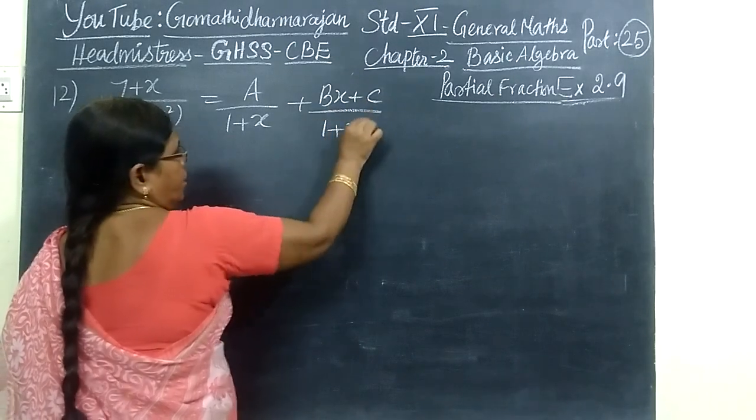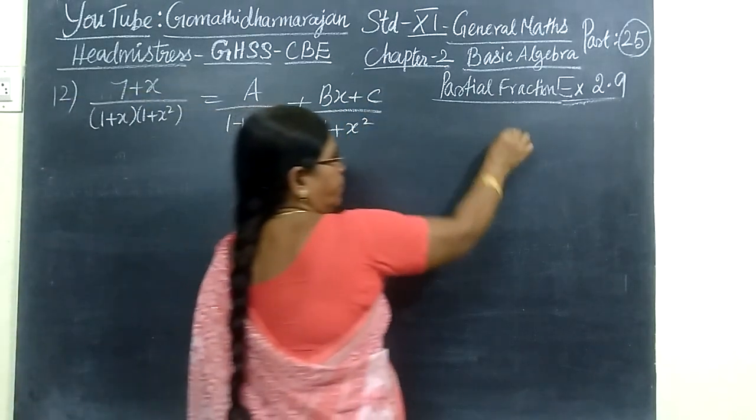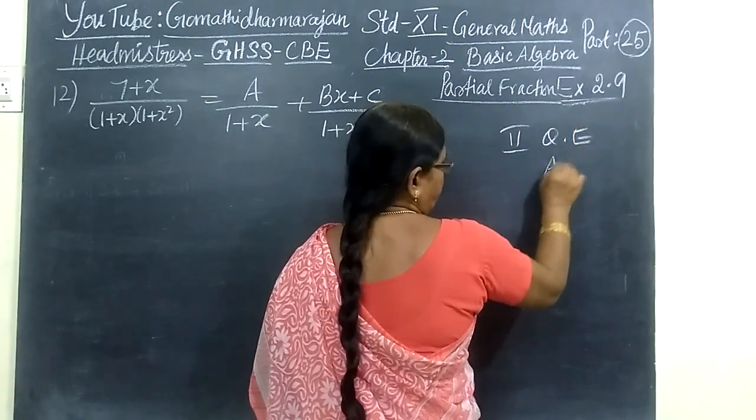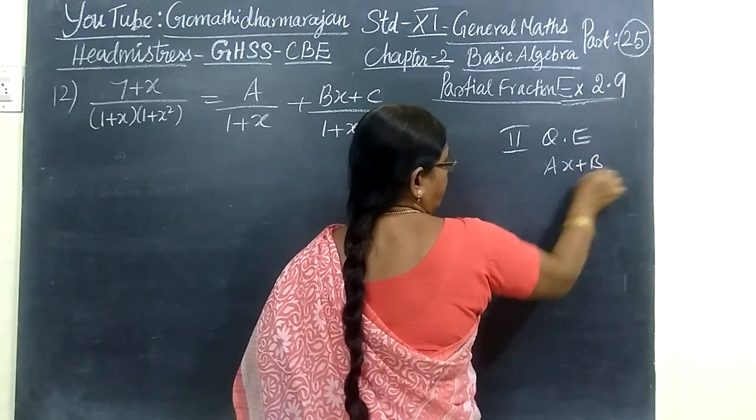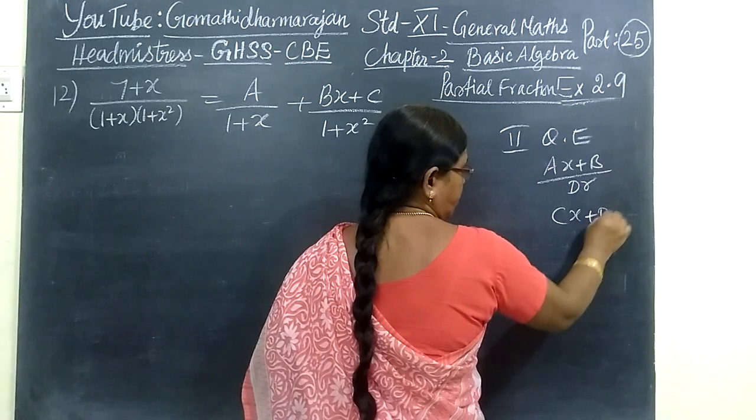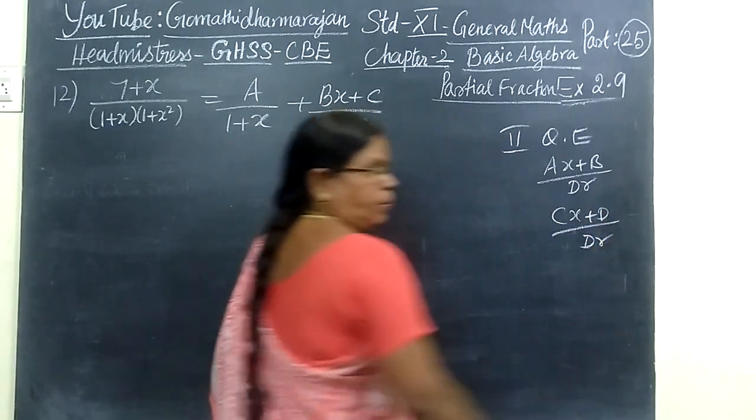The element and all the easiest way to write is to give A plus B by the denominator factor, C plus D by denominator factor.